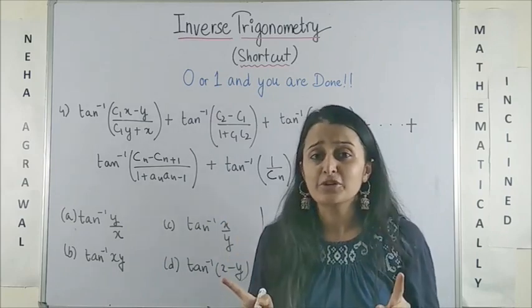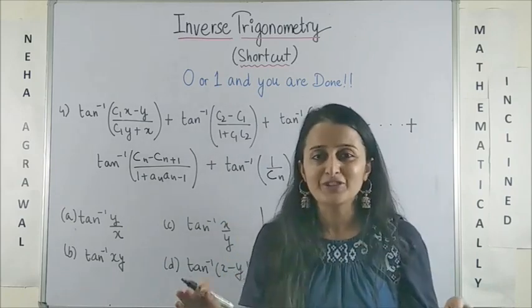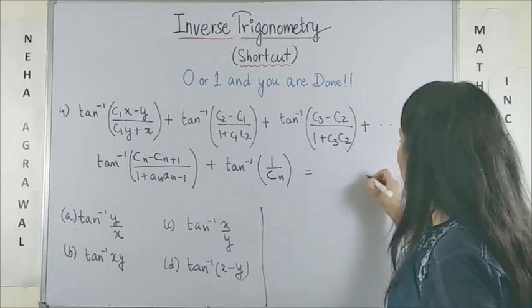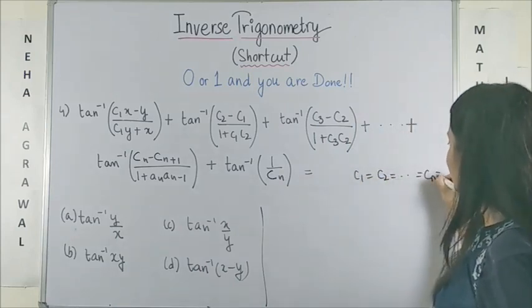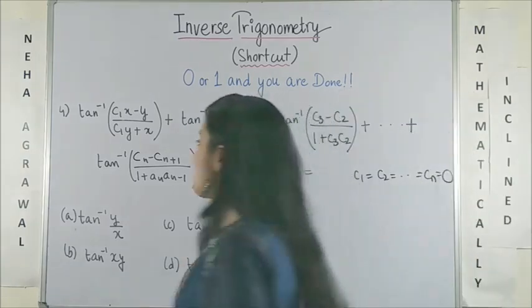But this trick 0 or 1 works so beautifully. Please have a look. If I take all these CIs to be simply 0, what happens?